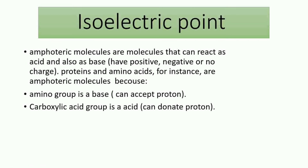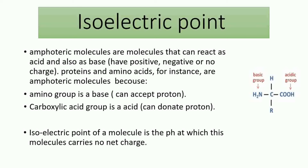Amphoteric molecules are molecules that can act as a base or as an acid depending on their surrounding pH environment, which means they can take a positive, negative, or even no charge. The most common examples are amino acids and proteins, because amino acids have an amino group which can act as a proton acceptor and a carboxylic acid group which can act as a proton donor. The isoelectric point is the pH at which a molecule has no net charge.